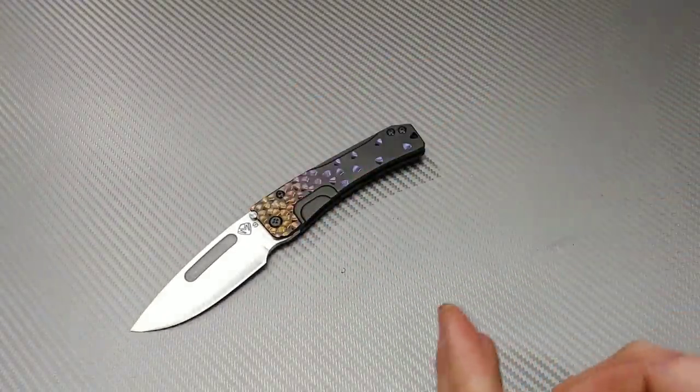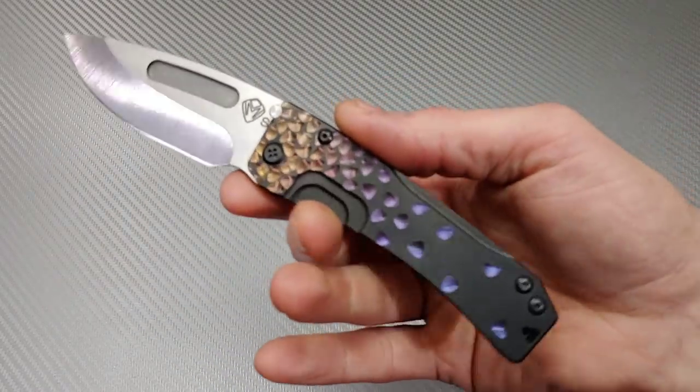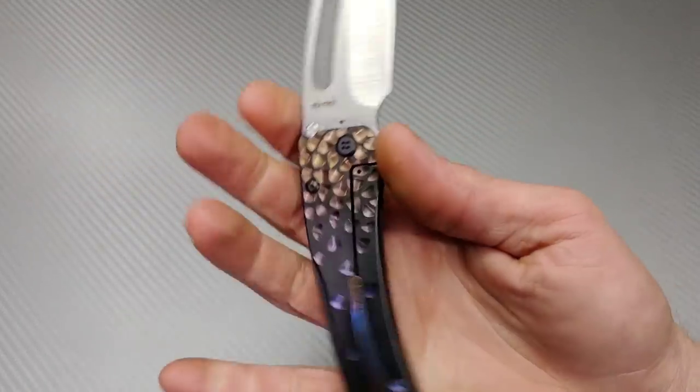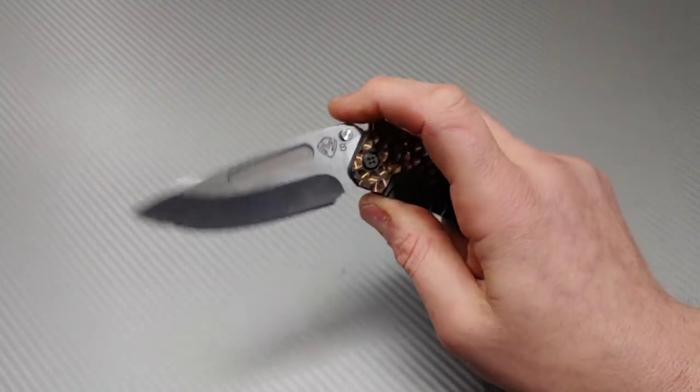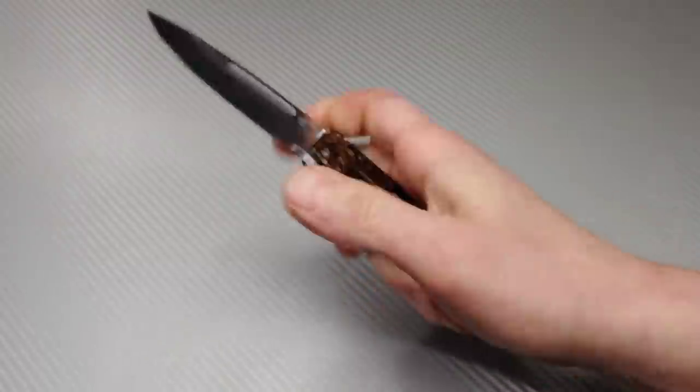Last but not least, we have a three-fold here. We have the Medford Slim Midi Marauder with the beautiful Falling Leaf Anno work. S35VN on bearings. Amazing action on this one. Titanium frame lock.